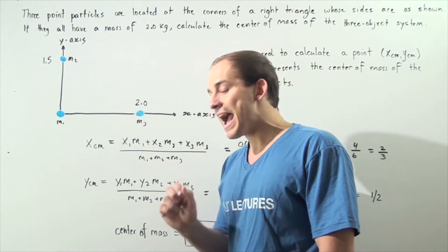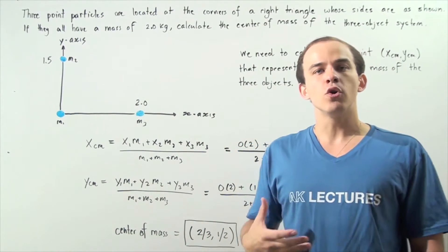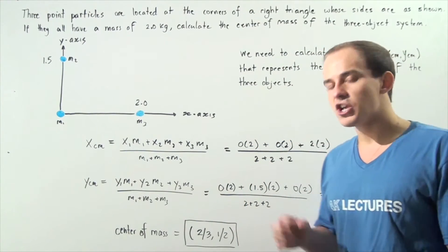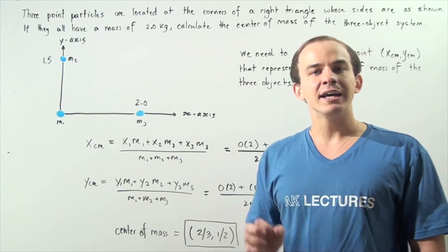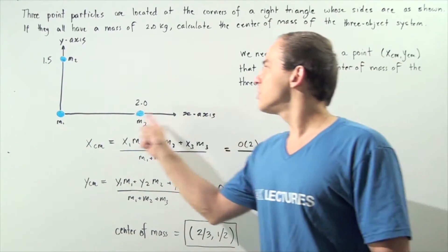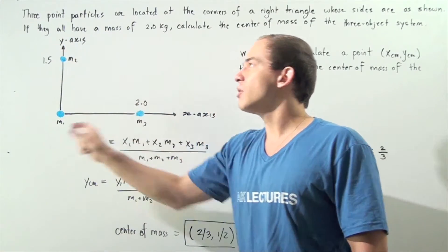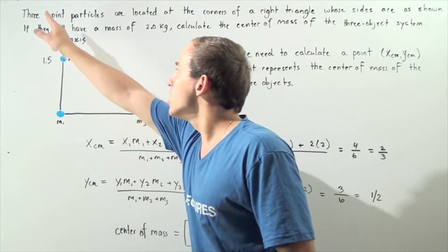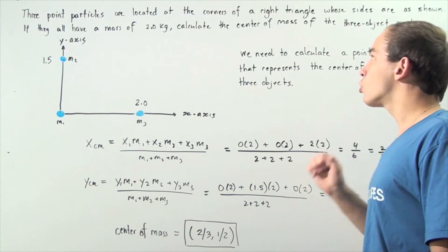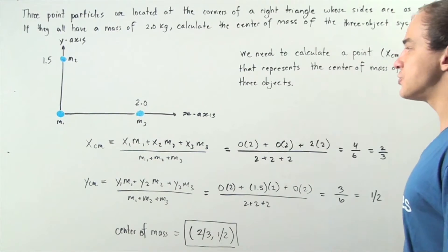Now we're going to examine how to calculate the center of mass of two or more objects — a system of multiple objects — that lie along a two-dimensional plane, for example the XY plane. We have the X axis and the Y axis.